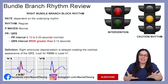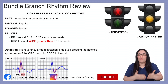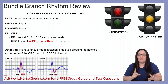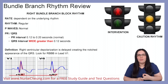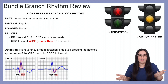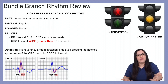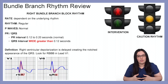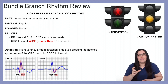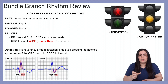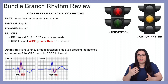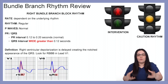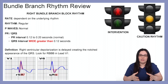To begin we're really going to take a look at the right bundle branch blocks. The rate, the rhythm, and the p waves are all going to be normal depending on what the underlying rhythm is. Our PR interval should also be normal between 0.12 to 0.2 seconds. Where the difference lies with our bundle branch blocks, whether they are right or they are left, is they are going to be wide, ugly, gross, and greater than 0.2 seconds.